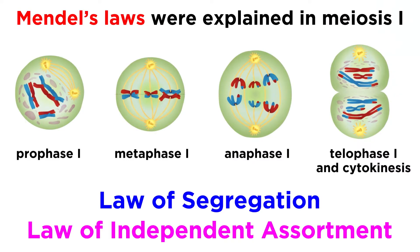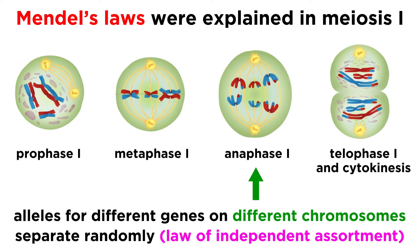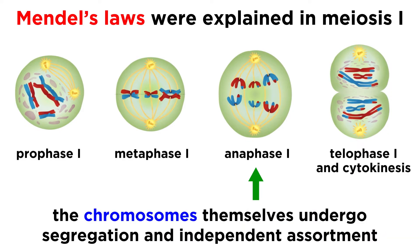It was at this point that studies regarding mitosis and meiosis were able to explain Mendel's laws of segregation and independent assortment, as we realized that the two alleles for a gene separate during gamete formation, and that alleles for two different genes separate in random combinations, so long as they are on different chromosomes, as the chromosomes themselves, which contain the genes at specific loci, will undergo segregation and independent assortment during gamete formation.